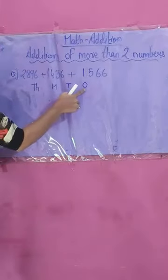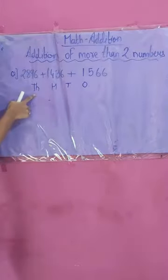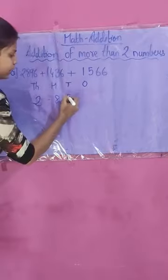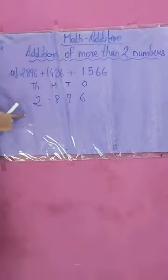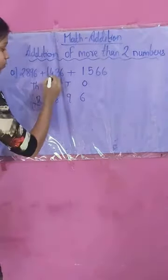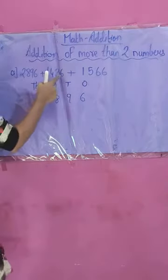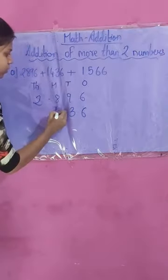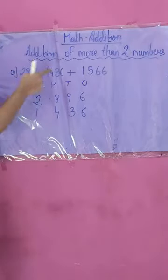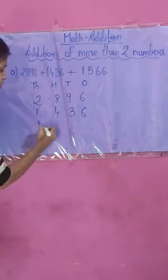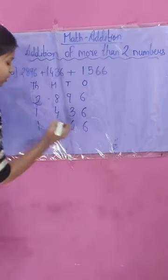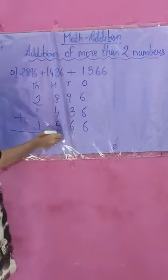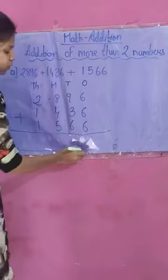We arrange according to the position of a four-digit number: 1, 10, 100, and 1000. So the first number, 2896, is written according to position. The second number, 1436 — 6 is at the 1's position, 3 is at the 10's position, 4 is at the 100's position, and 1 is at the 1000's position. The next number is arranged the same way, then we give the plus sign and proceed to find the sum.